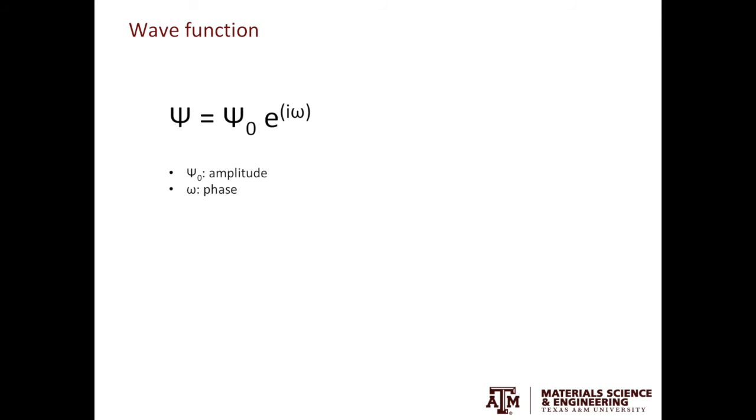To wrap up, I'd like to introduce you the general form of the wave function. The wave function ψ is equal to ψ₀ multiplied by e to the power of iω. ψ₀ carries the amplitude information. ω carries the phase information. The contrast in TEM is either from the change in amplitude or from the change in phase.